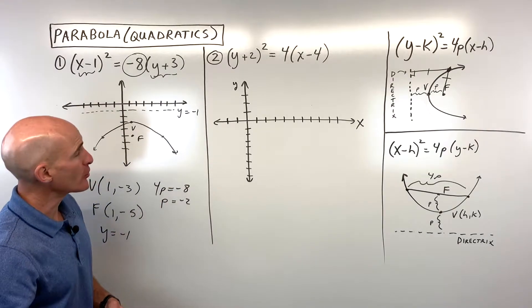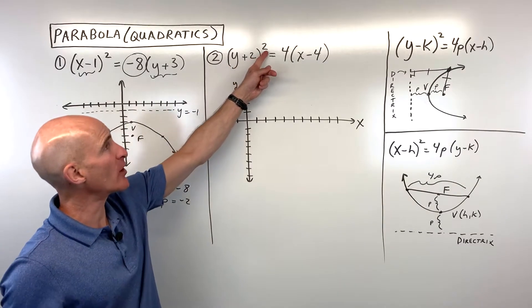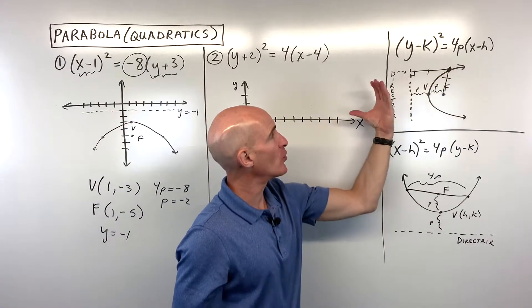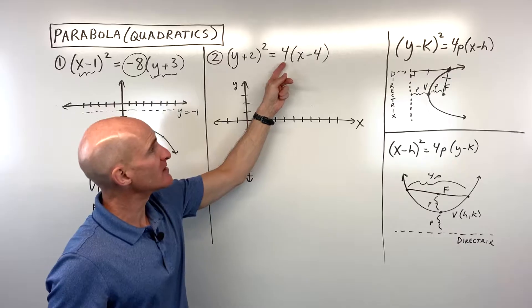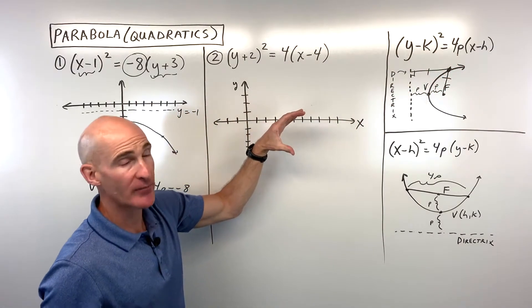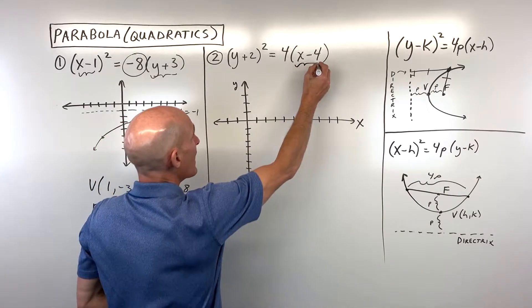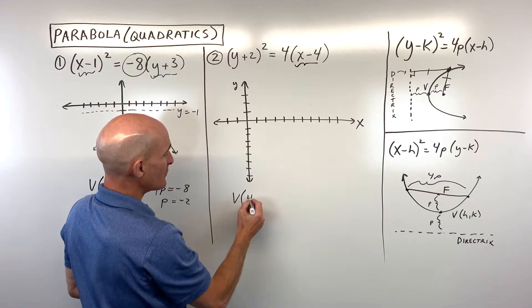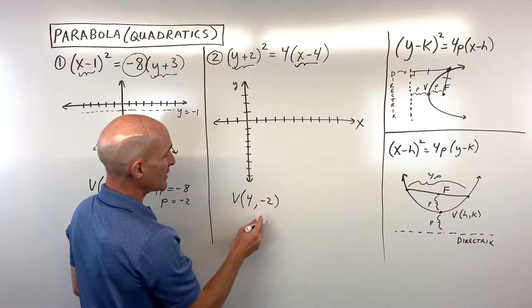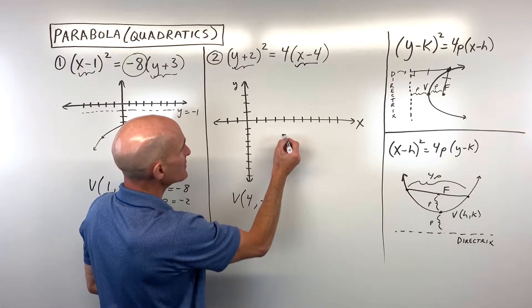For number 2, this is a y-squared type, which tells us it's going to be opening to the right or to the left. The p-value is positive, so it opens to the right. Our vertex is the opposite sign of what's in the equation: positive 4 for x, negative 2 for y. So the vertex is at (4, -2).